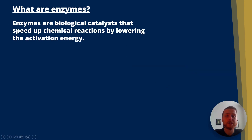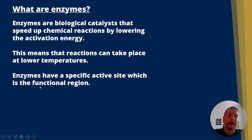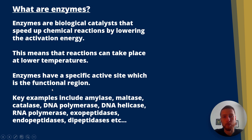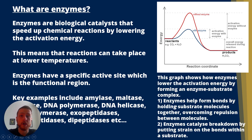So what are enzymes? Enzymes are biological catalysts that speed up chemical reactions by lowering the activation energy, meaning reactions can take place at lower temperatures. Enzymes have a specific active site, which is the functional region. Key examples include amylase, maltase, catalase, and DNA polymerase. Looking at the energy graph, with the enzyme the amount of energy required is far lower than without the enzyme — the activation energy is reduced. Enzymes help form bonds by holding substrate molecules together, overcoming repulsion between molecules and those intermolecular forces.